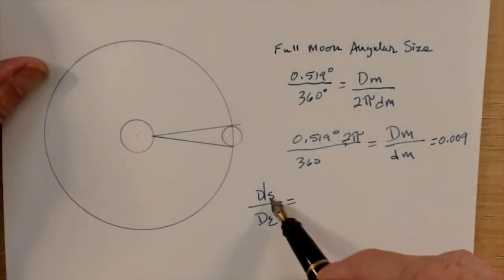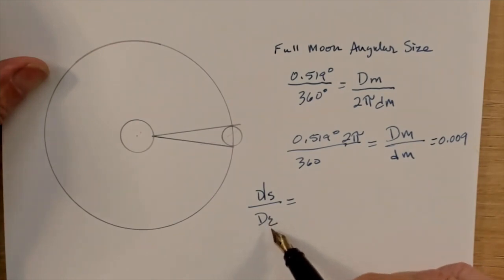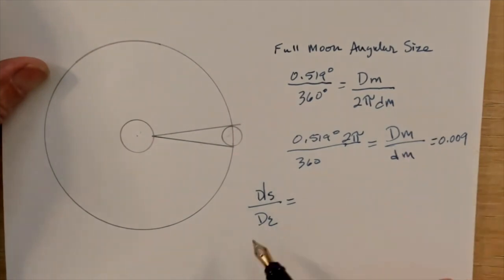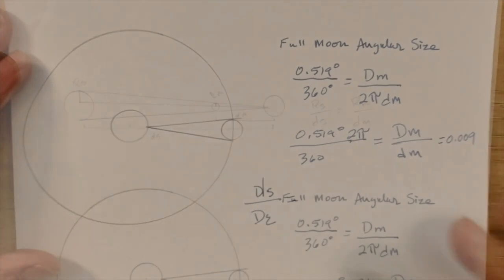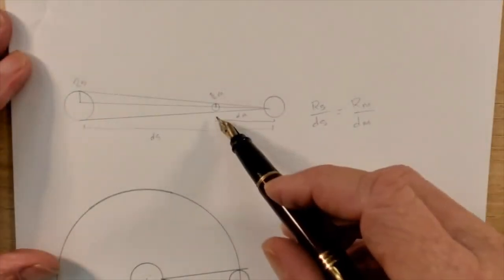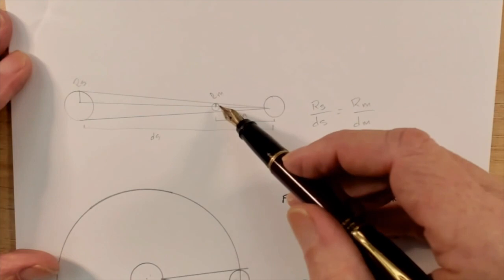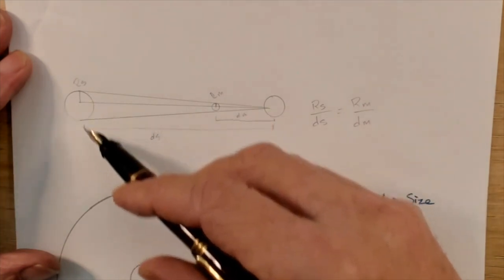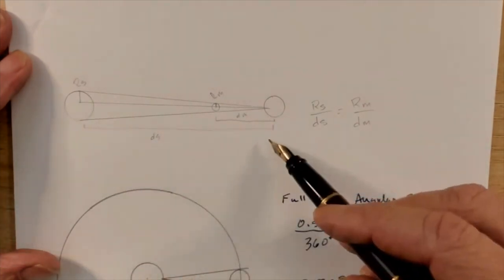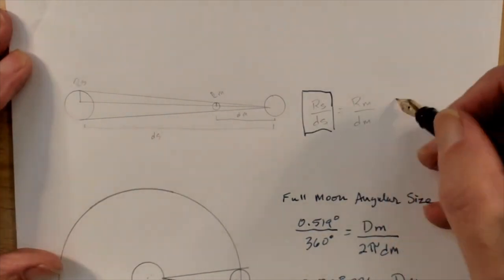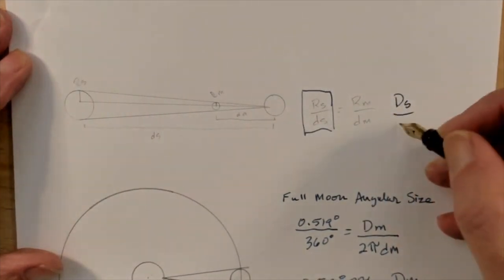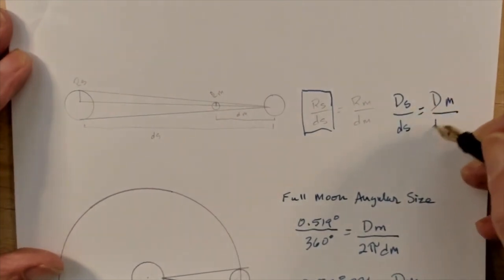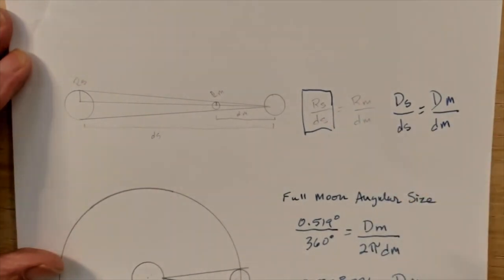What we really want to know is the distance to the sun in terms of the diameter of the earth. We need to convert this to something we have an understanding of. From our first part where we looked at the solar eclipse, we found that the radius of the moon over the distance to the moon equals the radius of the sun over the distance to the sun. We can also look at this as the diameter of the sun over the distance to the sun equals the diameter of the moon over the distance to the moon.